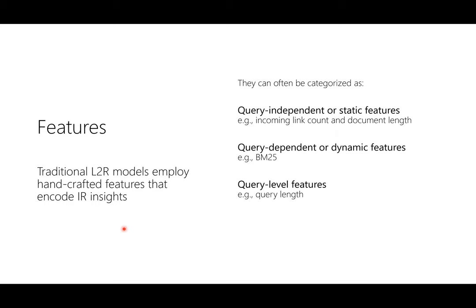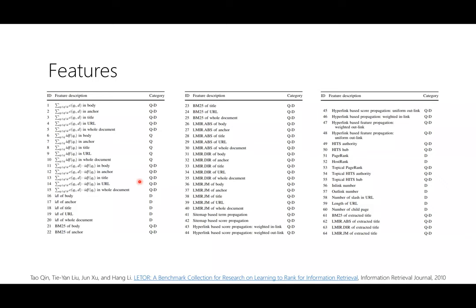I'll make a somewhat controversial statement: all ranking loss functions effectively break down ranking into either a regression or a classification task. And all classification tasks break down into effectively regression tasks. So it's a house of cards — if you know how to do regression and classification, you'll realize that common ranking losses are basically formulating the ranking problem as regression or classification. We'll go through that in a couple more slides.